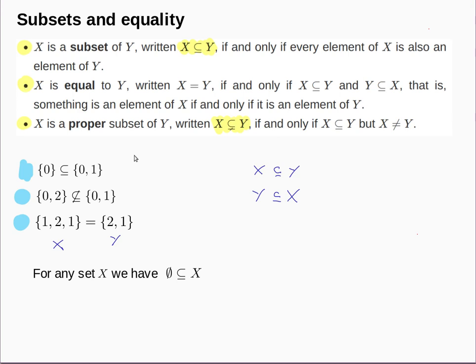My final observation is that for any set X, the empty set is a subset of X. The reason is that if you think it's false, you would have to find an element of the empty set which is not in X — but you can't, because there are no elements in the empty set. So since you can't find a counterexample, the empty set is a subset of every set X.